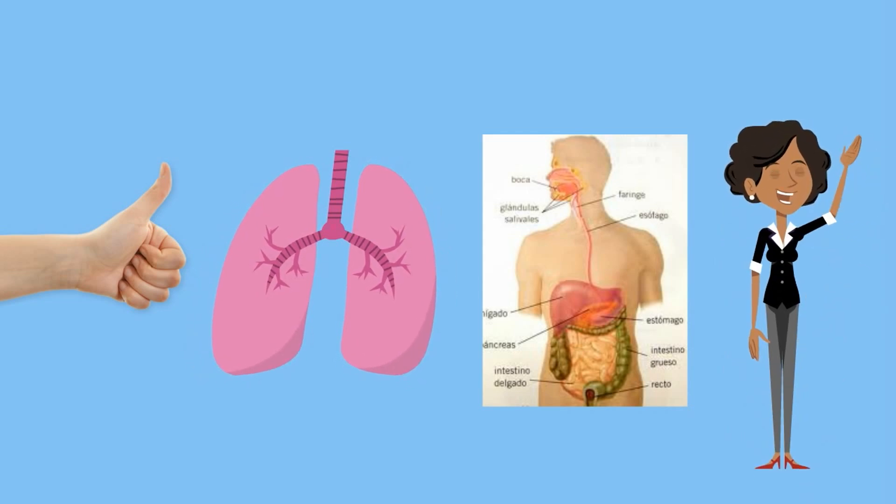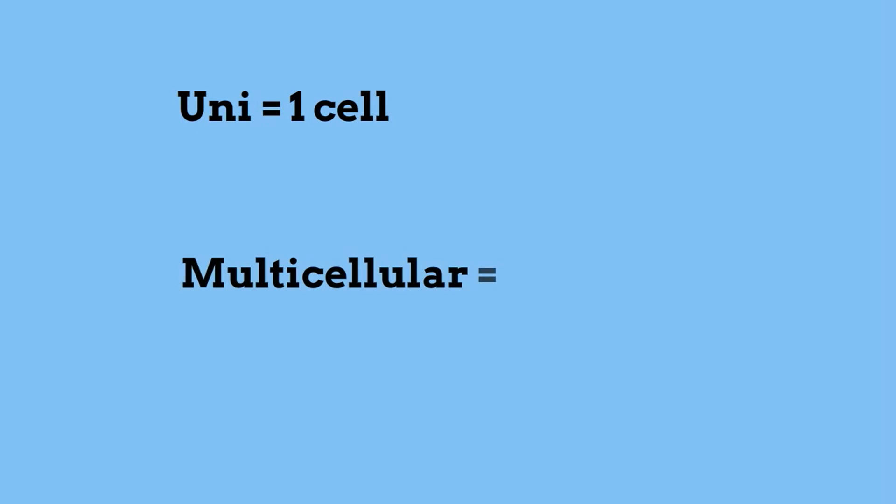In summary, unicellular means one cell and multicellular means two or more. Thanks for watching.